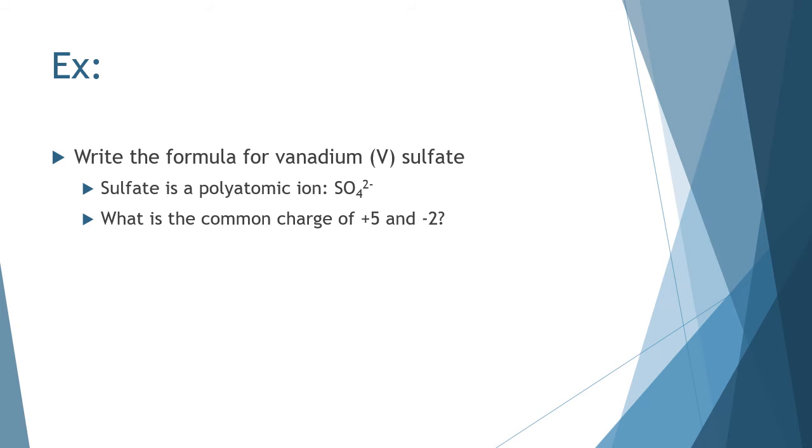So, when writing the formula, we should consider what the common multiple of plus 5 and negative 2 is in order to try to determine how many of each we should have. In order to balance the charges, I am going to need two of the vanadium 5 ion. So, the first part of our formula will be V2, which looks just as it usually does.